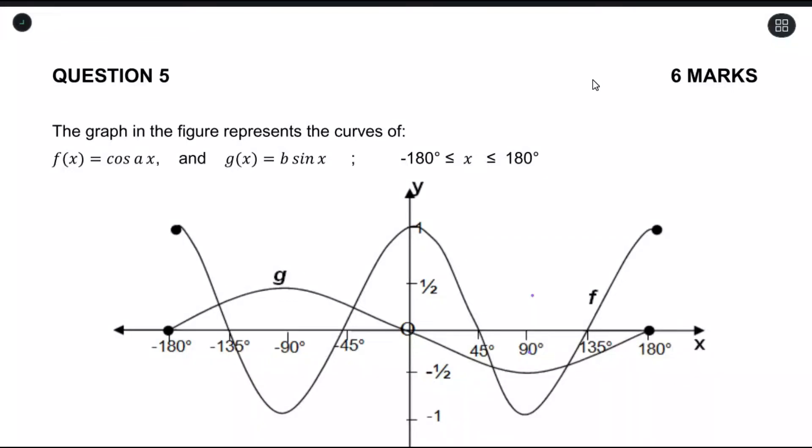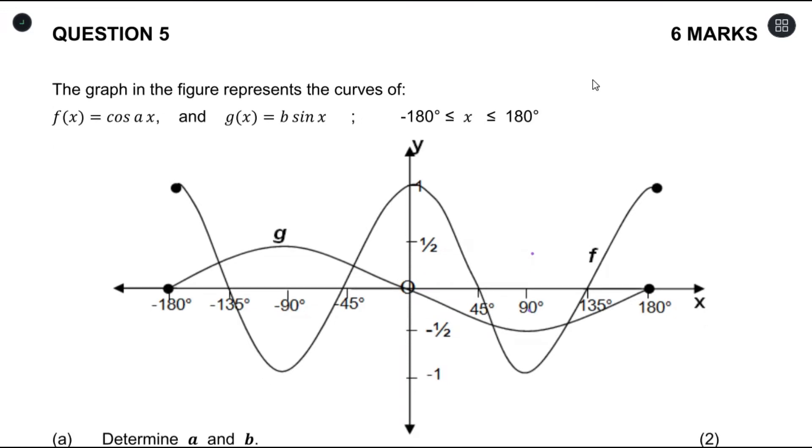This question says the graph in the figure represents the curves of f(x) equals cos(ax) and g(x) equals b·sin(x). Now x is between negative 180 and 180 degrees. We have two graphs here: the graph of g and the graph of f.